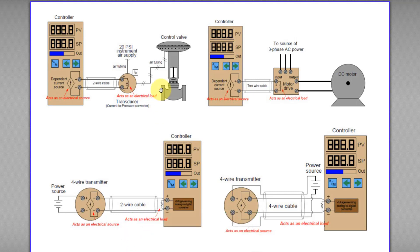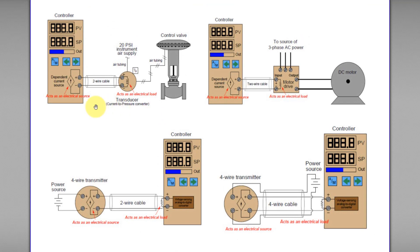Here I have a few pictures to share with you about electrical source and electrical load. Let's take this example. This is a controller, this is a control valve, and this is a transducer — an IP transducer, current-to-pressure converter. This controller provides the power source. A circuit needs a minimum of one power source and one load. Since the controller provides power, it acts as the electrical source because it powers the whole loop. And this IP transducer acts as the electrical load.